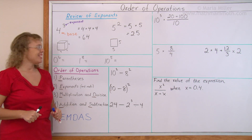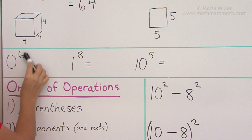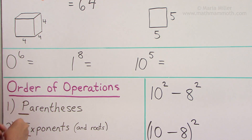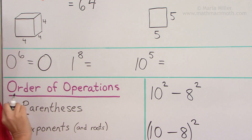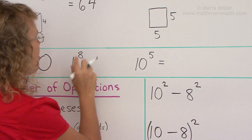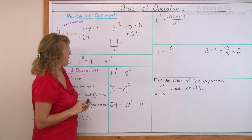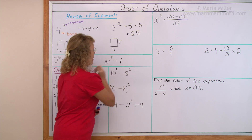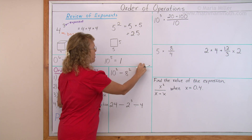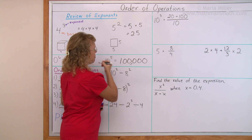Here are some special easy cases for certain powers. 0 to the sixth power — this whole thing is called a power — and of course, if you multiply 0 by itself 6 times, all you get is 0. 1 to the eighth power: you multiply 1 by itself however many times, you just get 1. And 10 to the fifth power — there's a shortcut: 10 times 10 times 10 times 10 times 10. You write a 1 and then as many zeros as the exponent — five zeros — so we get 100,000.